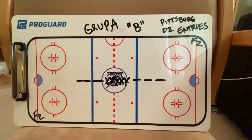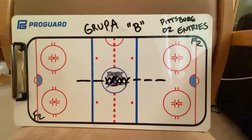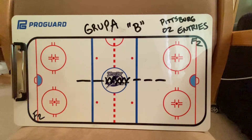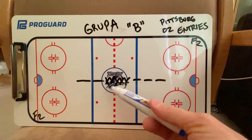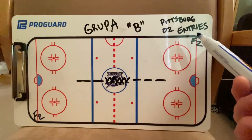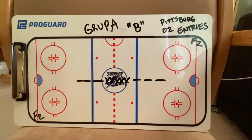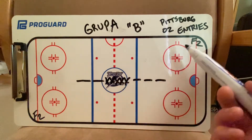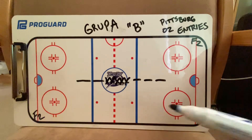For Group B, we're going to work on a modified entry. We'll have the forwards and the D in the middle, but we will have an F2 line in the corners as well. Pucks are in the middle, pucks are in the corners.